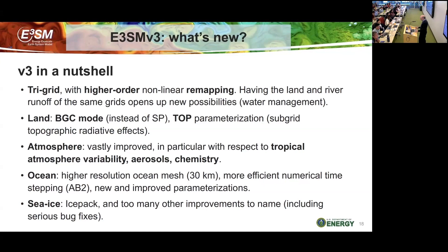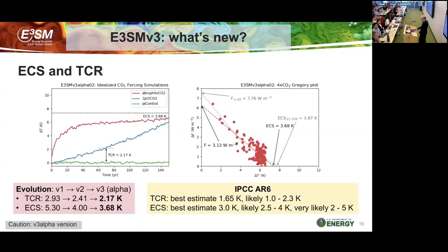The atmosphere has a lot of changes — Sha Chang will talk about many of them later today. It has vastly improved tropical variability and aerosol chemistry. The ocean is using a brand new mesh, much higher resolution globally at around 30 km, with more efficient time stepping and improved parameterizations that came in with the V2.1 release. The sea ice has lots of improvements — many bug fixes, moving to the latest version of ice pack, and significant serious bug fixes.